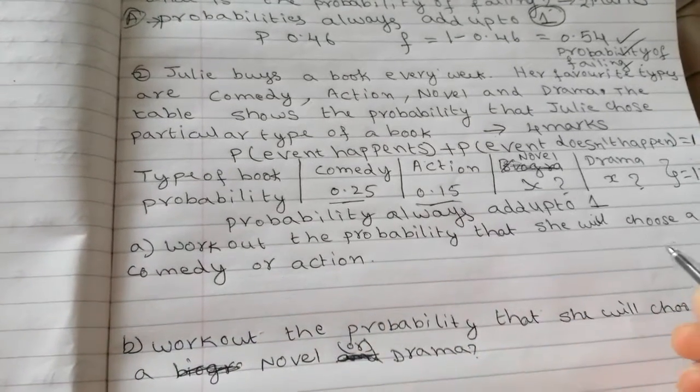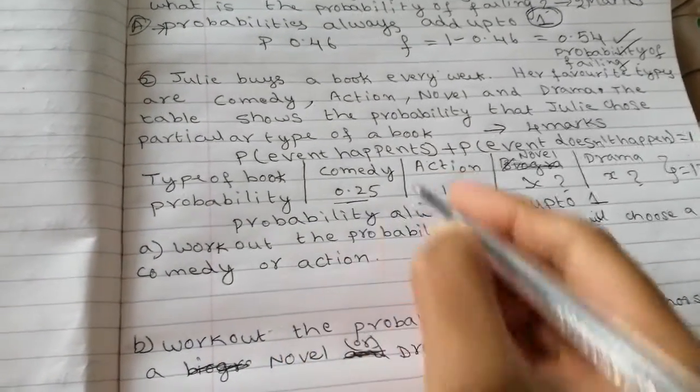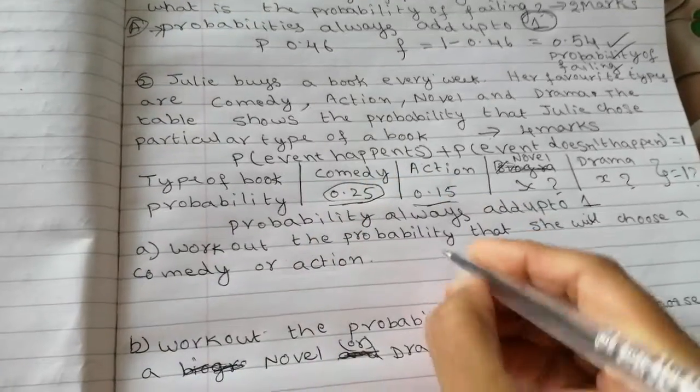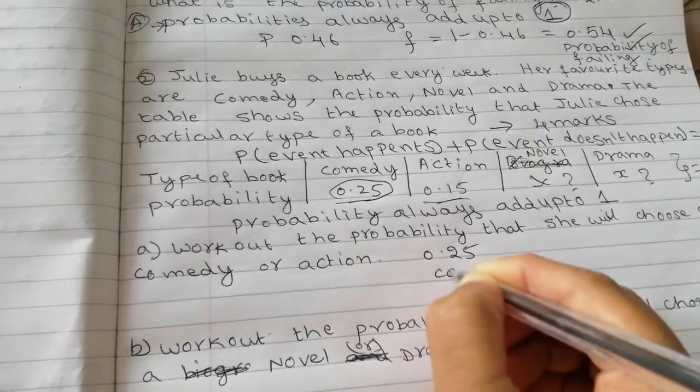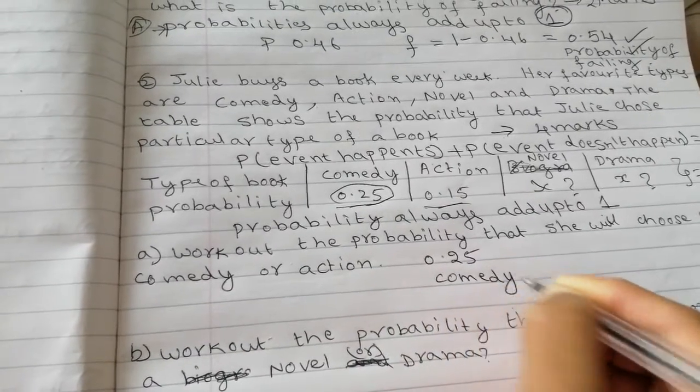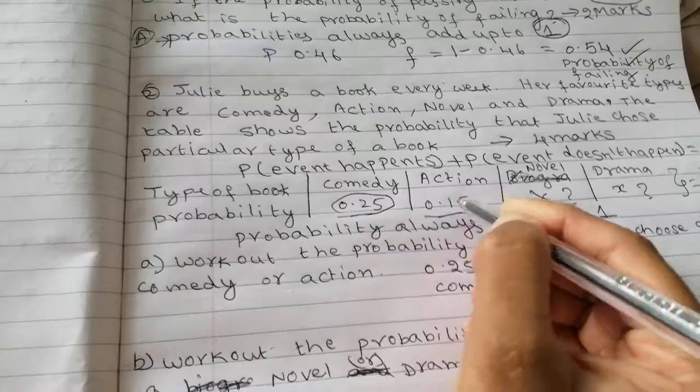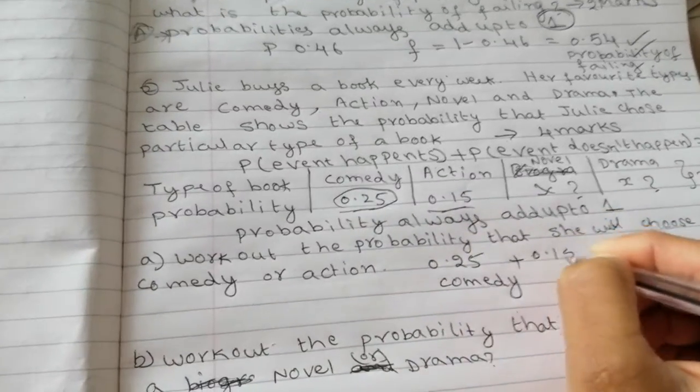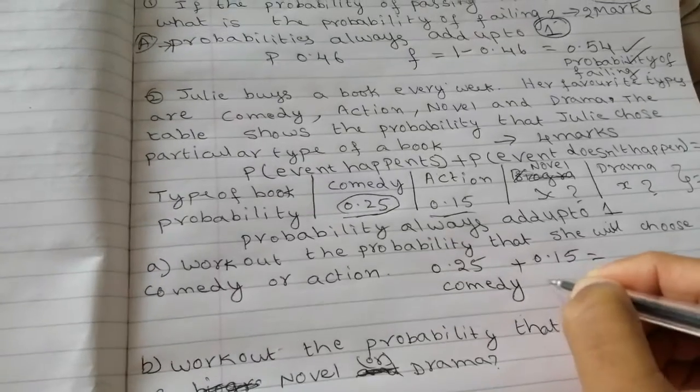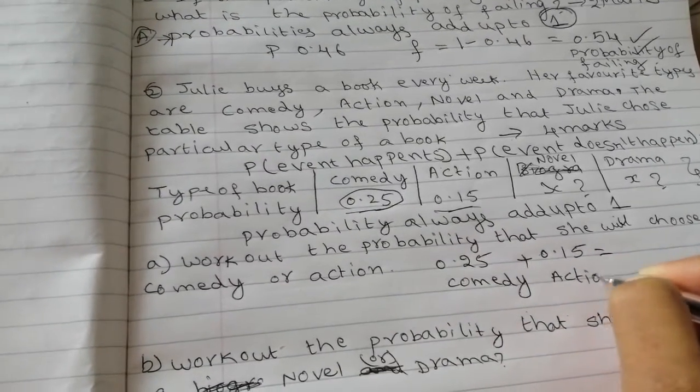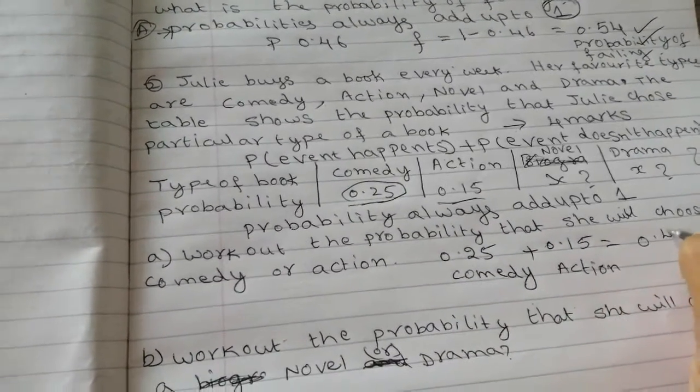Work out the probability that she will choose a comedy or action. So we know comedy, what is comedy? 0.25, I am taking from question. And what is action? 0.15. So work out the probability, 0.4.